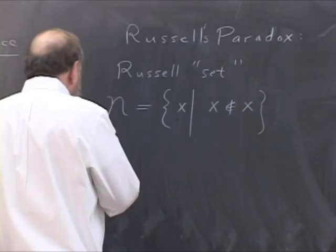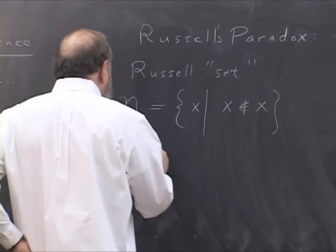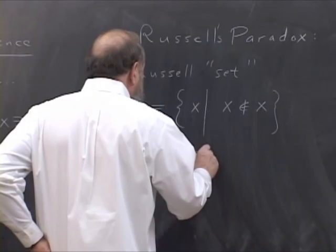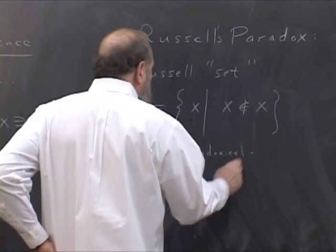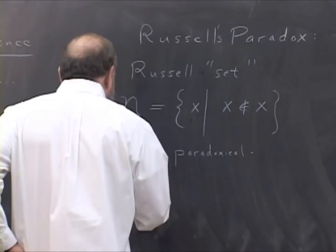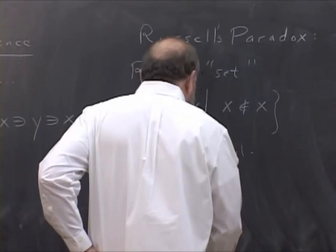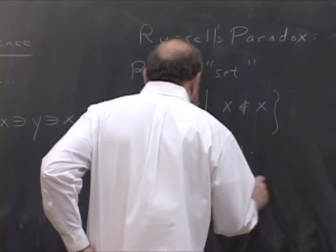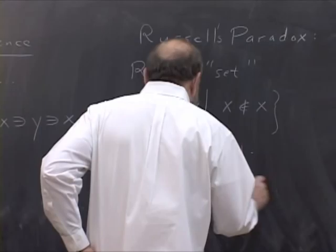The paradox is that n is itself paradoxical. That's because n being an element of n implies n is not an element of n. And on the other hand, n not being an element of n implies n is an element of n.